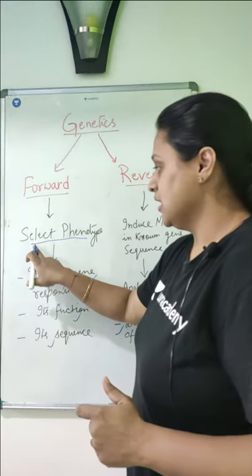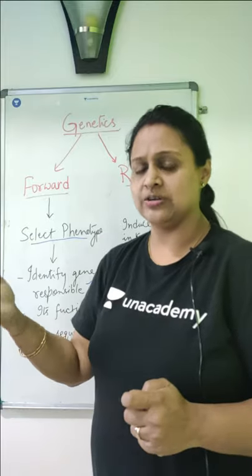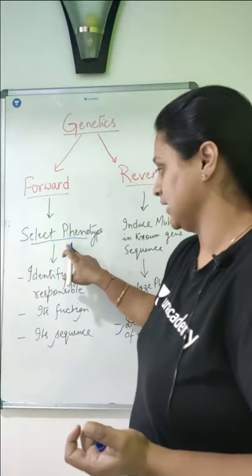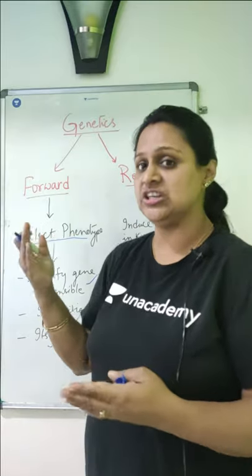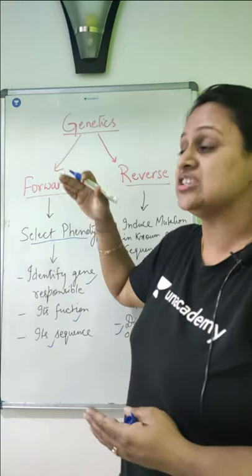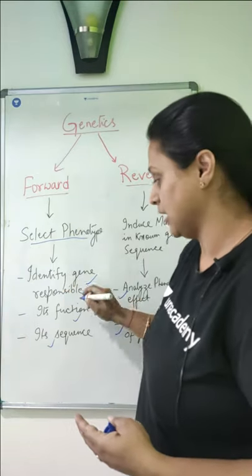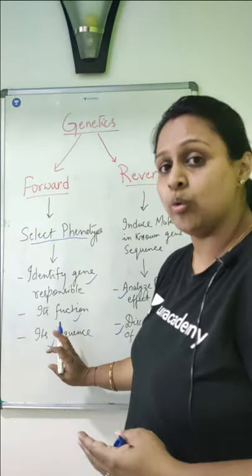What is forward genetics? We detect the phenotype first. We detect any mutation, phenotypic expressions. We don't know which gene that mutation or phenotypic expression is due to. Then we recognize the gene, identify the gene's function and sequence. This is forward genetics.